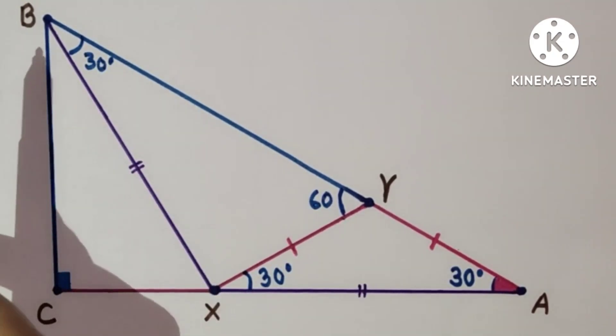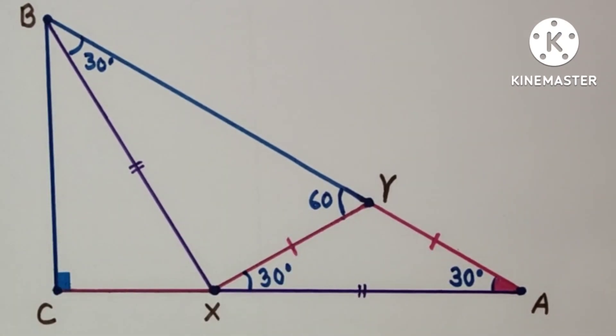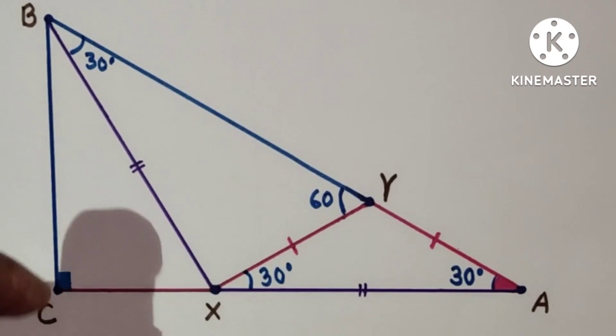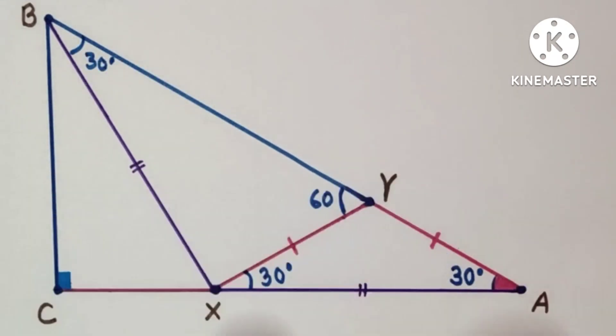Now we have to find the ratio between BY and YA. We need some construction here using pure geometry. So the construction is draw a line segment XP which is equal to XY.